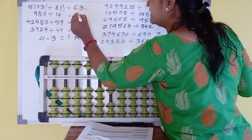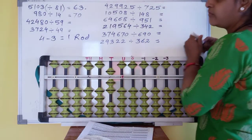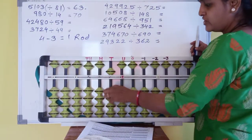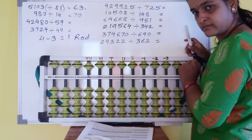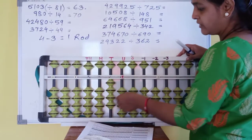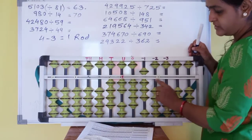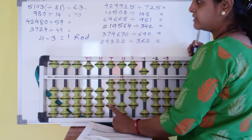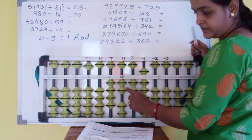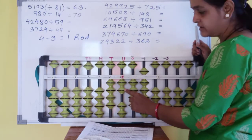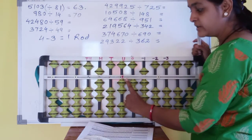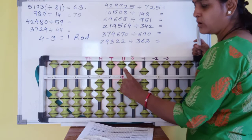Next sum: 4480 divided by 59. 5 minus 3 is 2. First digit is 4, not possible. Then 42 — table 40 to less. 8 times 5 — five eights is 40. Four zero. Go on to the next rod.